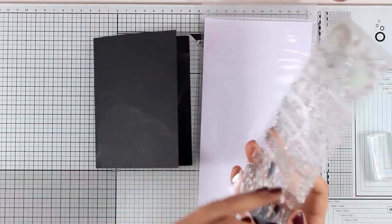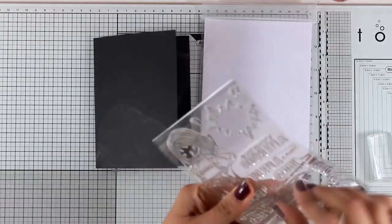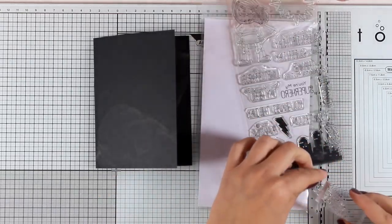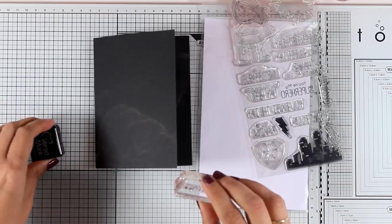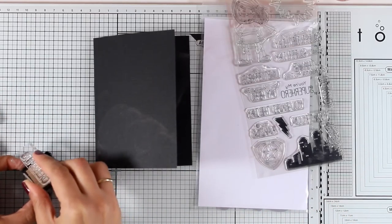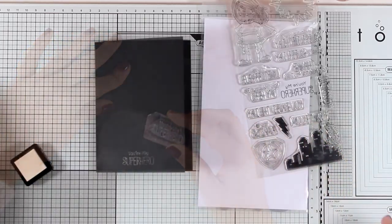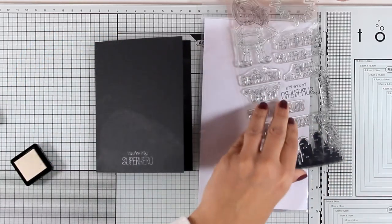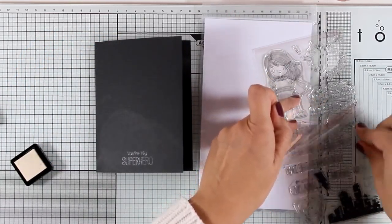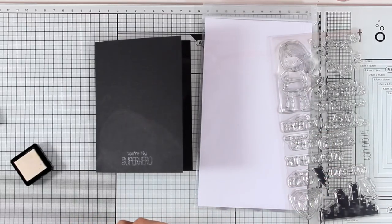So I'm starting on a black card base and I have used my powder tool there just to apply some powder which is going to eliminate static electricity since I'm planning to do some heat embossing. First I'm going to stamp the sentiment and that's 'you are my superhero' and it comes from the new stamp set that's called 'you are super'.